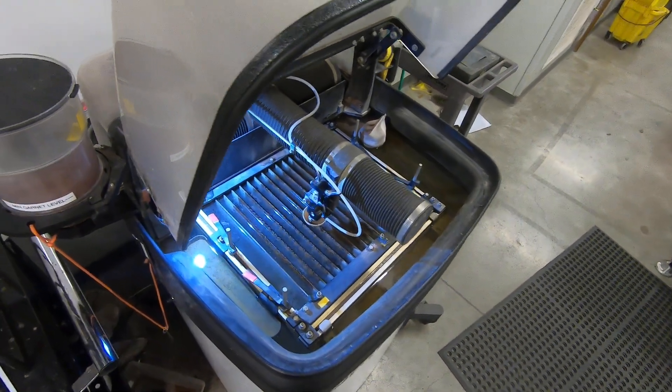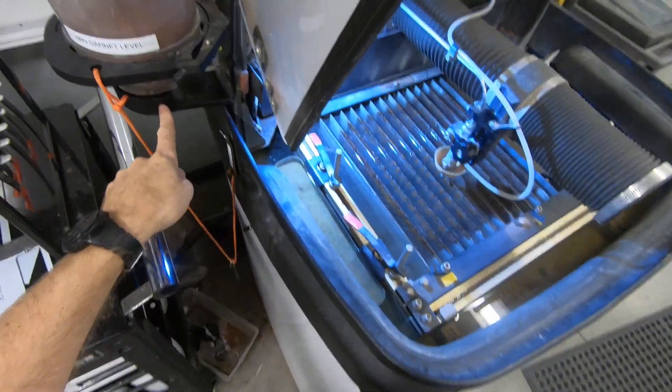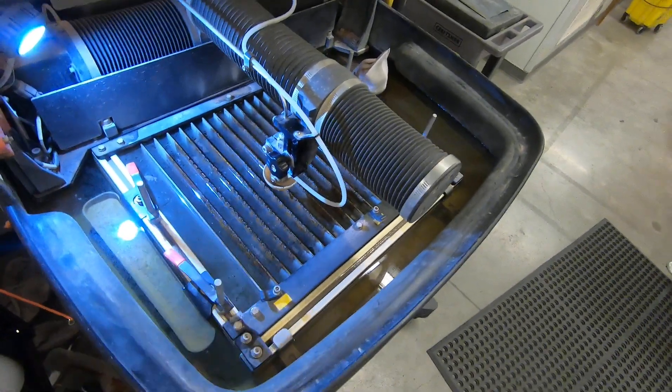When your Protomax goes quiet and starts squirting water out of here, that means the nozzle has a clog.